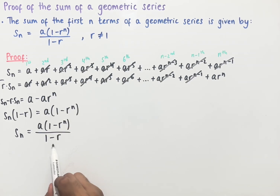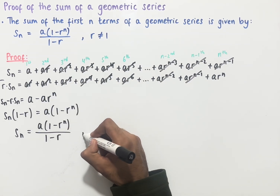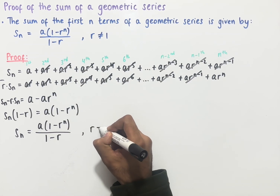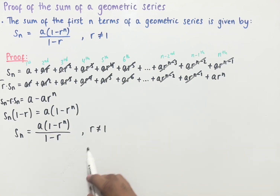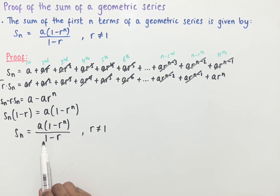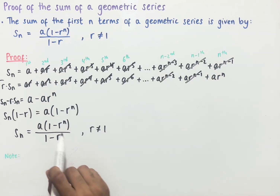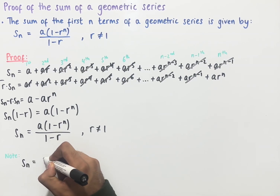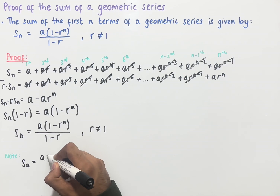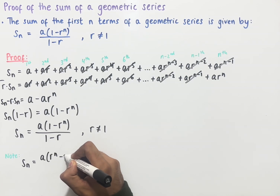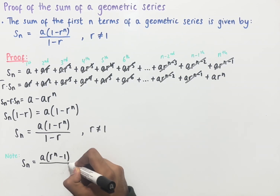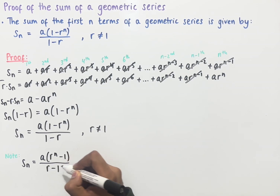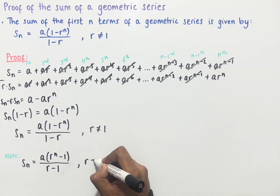This division is only valid if r does not equal 1, because if r does equal 1 then the denominator is 0, and we cannot divide by 0 because it is undefined. It is also worth noting that this sum can be written as Sn equals a brackets r to the power of n minus 1, all over r minus 1, where r cannot equal 1.